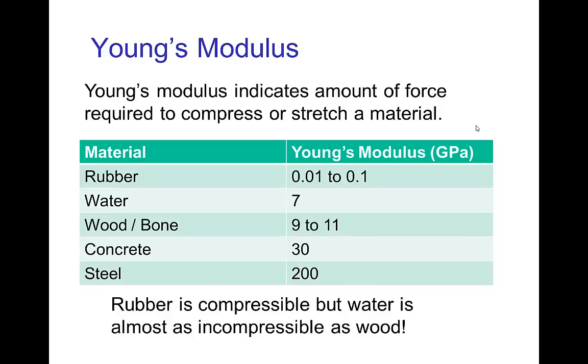Now a material such as rubber happens to be very compressible, so it has a small Young's modulus. On the other hand, water has a much larger Young's modulus, and in fact it's almost as large as wood and bone.